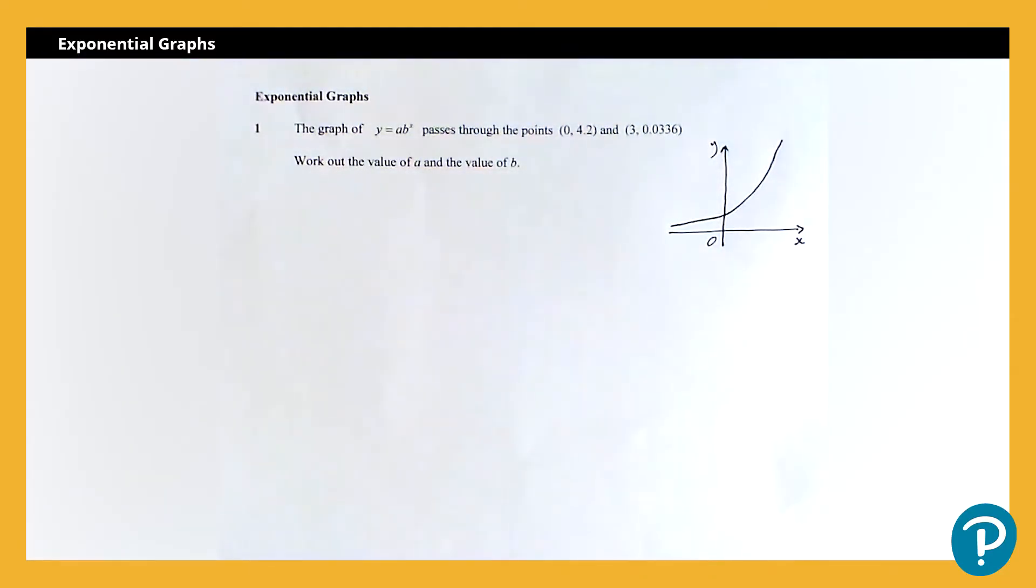So we're going to look at, we've got a question where it's given us a graph of y equals a times b to the power x, and it tells me two coordinates that that graph passes through. I've got (0, 4.2) and (3, 0.0336), and it's asking me to work out the value of a and b. So we're going to use the coordinates that we're being given to work out each of these values.